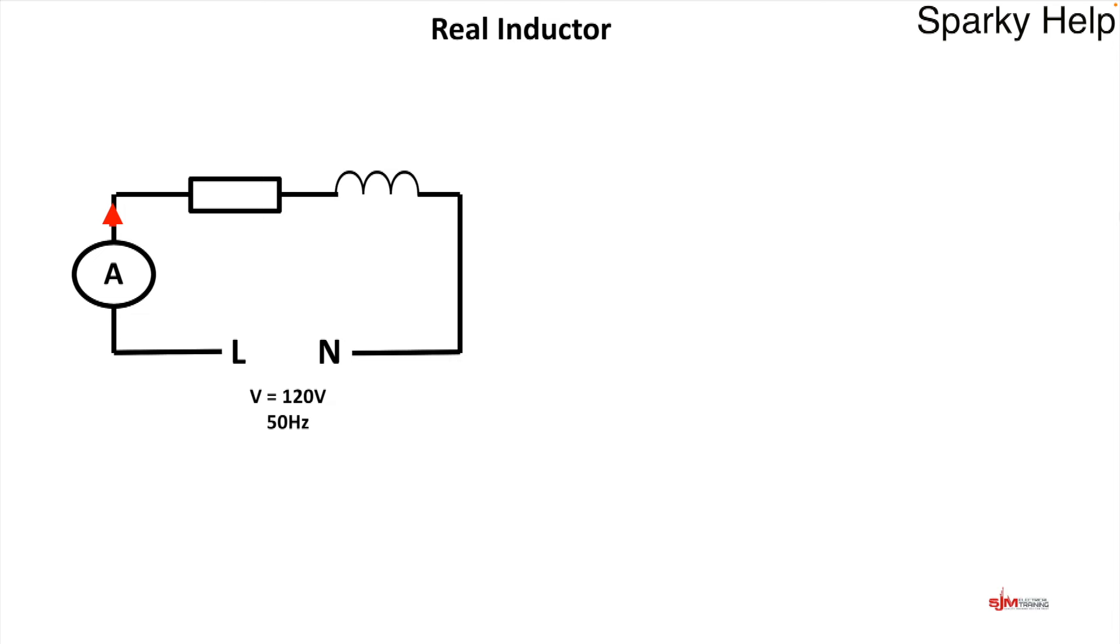Now let's look at a real inductor. A real inductor possesses resistance and inductance. So we'll give them some values, and we'll make them 30 and 40. And we'll give a current of 2.4 amps.